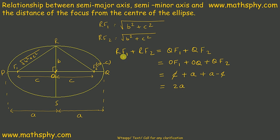Means RF1 plus RF2 is equal to 2A. Now we have already seen RF1 is equal to this, RF2 is equal to this, so I will write here, this and this will be 2 root B square plus C square equals to 2A. So A equals to root B square plus C square.